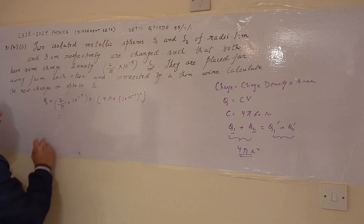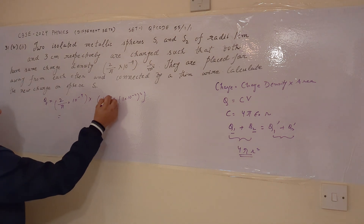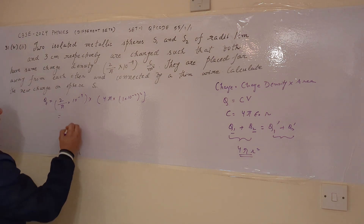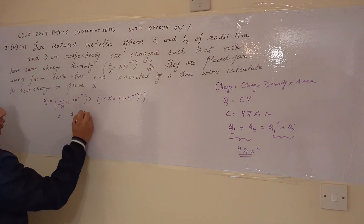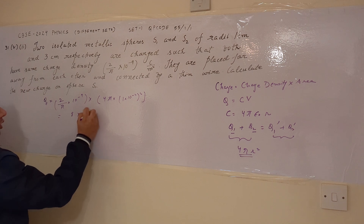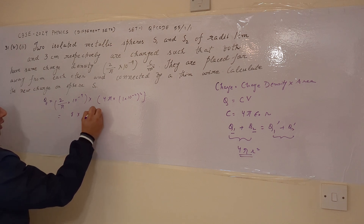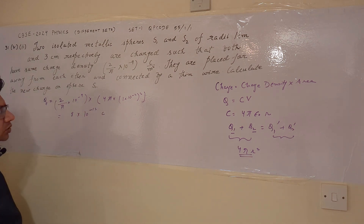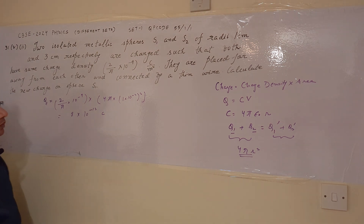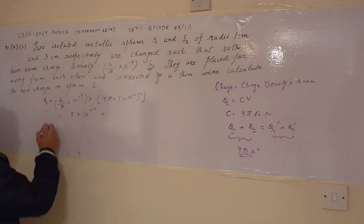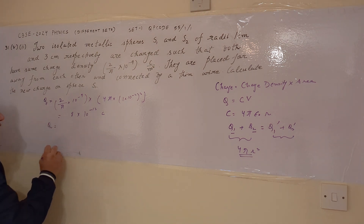After solving, the π cancels and we get Q1 = 8 × 10⁻¹³ C. This is the charge of the first sphere. Similarly, we can calculate the charge of the second sphere.